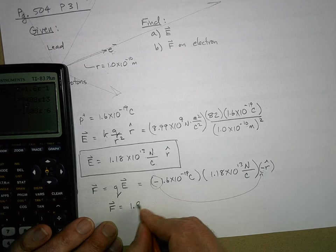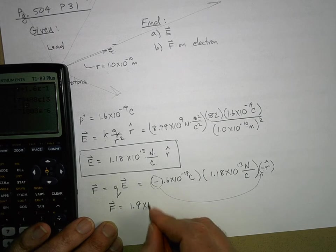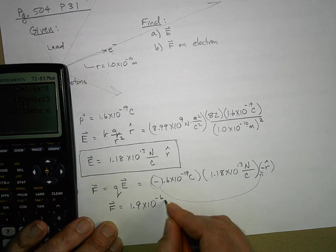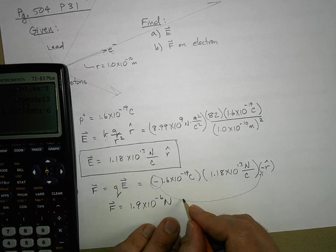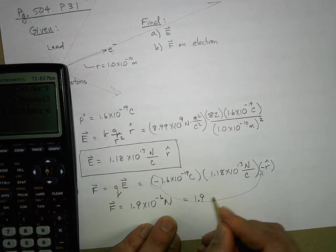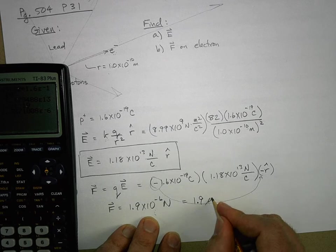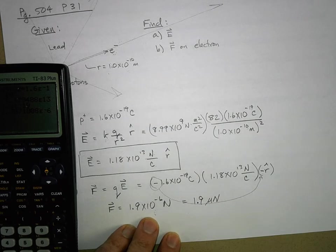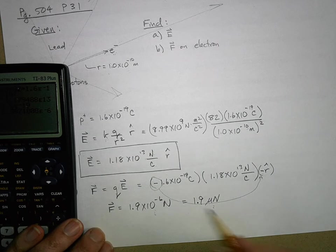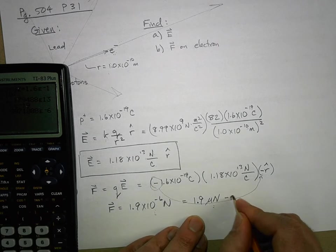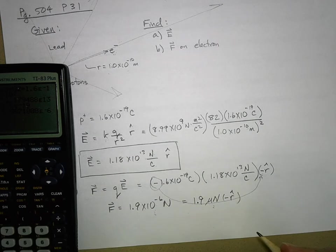1.9 times 10 to the negative 6 newtons, or if you really want to get fancy, you can call it 1.9 micro newtons. You don't have to do that, but what direction? Negative r hat. What does negative r hat mean? It's towards the nucleus.